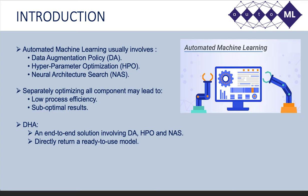Besides, previous architectural optimization algorithms usually contain searching and retraining two stages, which makes them suffer from low performance correlation between the searching and retraining stage. Based on these concerns, we propose an end-to-end solution that integrates the AutoML components and returns a ready-to-use model at the end of the searching stage.